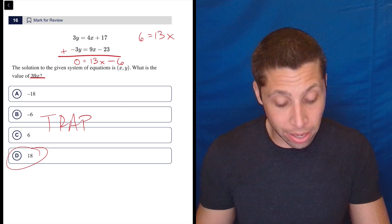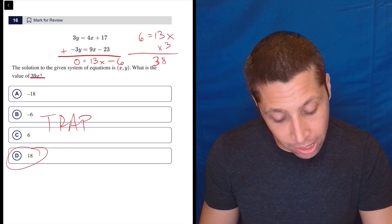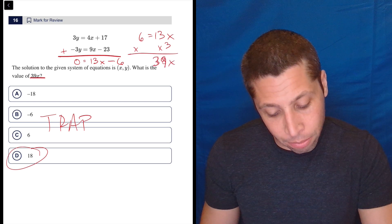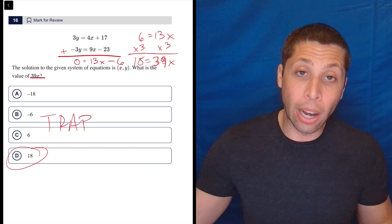How do we get from 13 to 39? We multiply by three. So that gets us 39x. And if we do that on this side for balance, that gets us to the 18 that we had. So there you go.